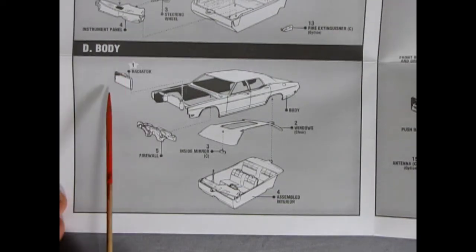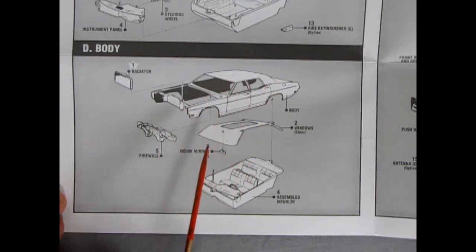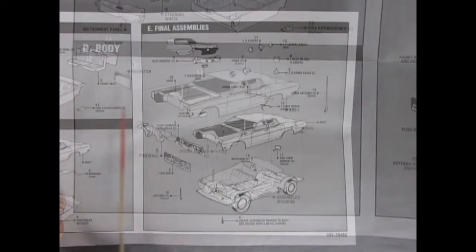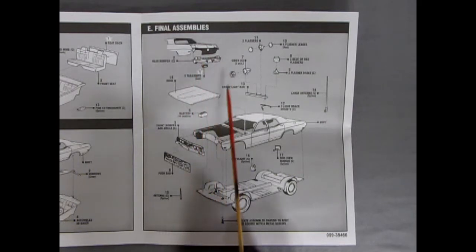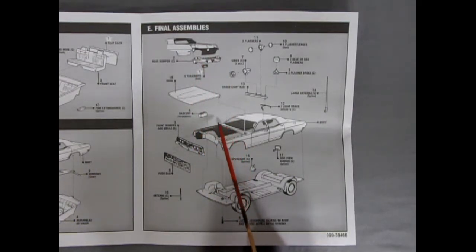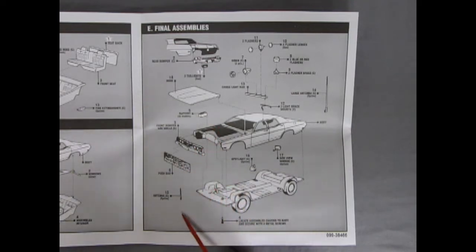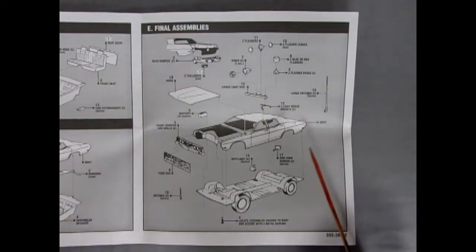Next up we got the body of this great kit with our radiator going into our radiator support which is molded into our four-door body. There's our windows and a little inside mirror here for the rear view, a firewall to keep us cool from the engine, and then our assembled interior will pop up in there.